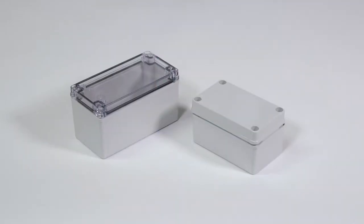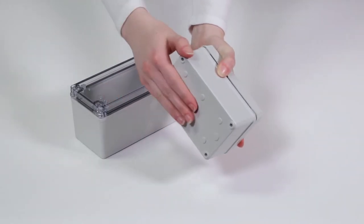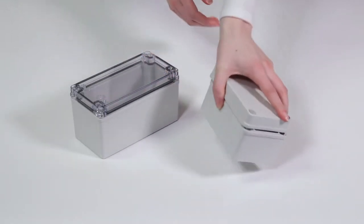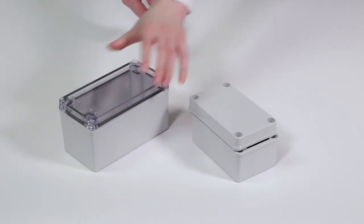This video is for Bud's PTS series enclosures made of plastic reinforced with fiberglass. Fiberglass adds outstanding strength and high impact resistance, making our PTS series an excellent alternative to metal and other plastic enclosures for many applications.